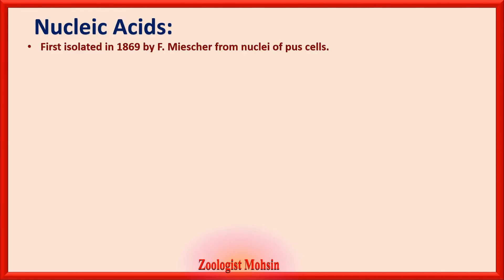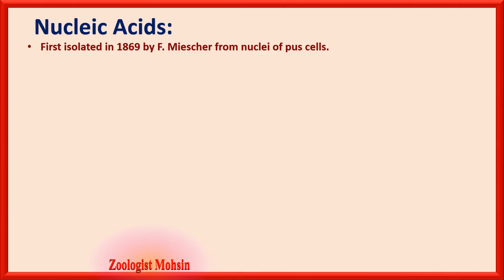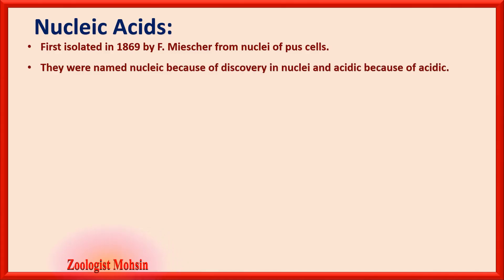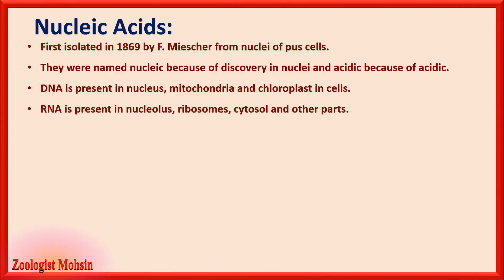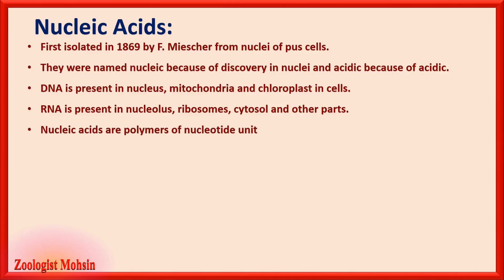Nucleic acids: the first nucleic acids were isolated in 1869 from the nuclei of pus cells. They were named 'nucleic' because of their discovery in nuclei, and 'acidic' because of their acidic nature. DNA is present in the nucleus, mitochondria, and chloroplasts. RNA is present in the nucleolus, ribosomes, cytosol, and some other parts.